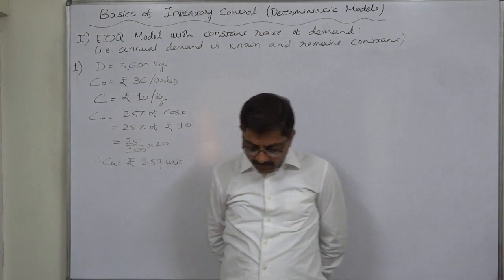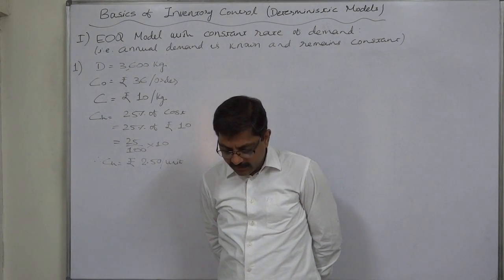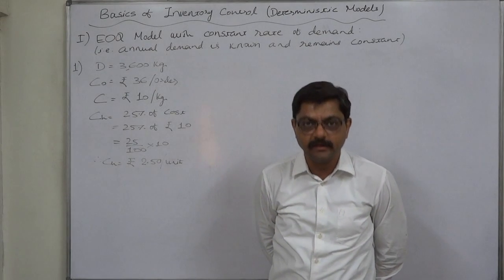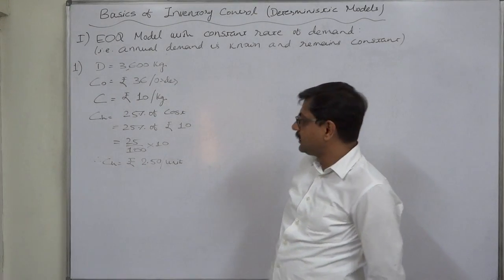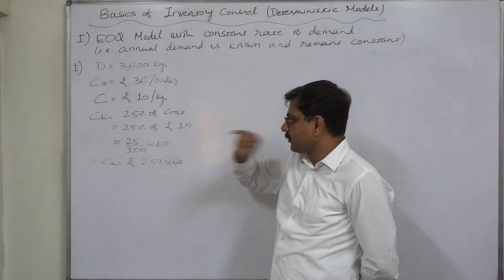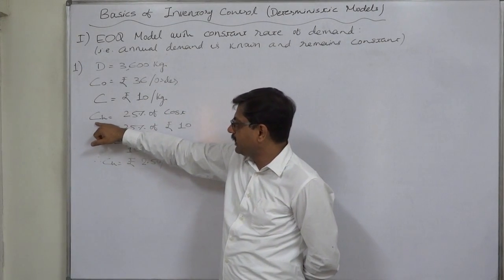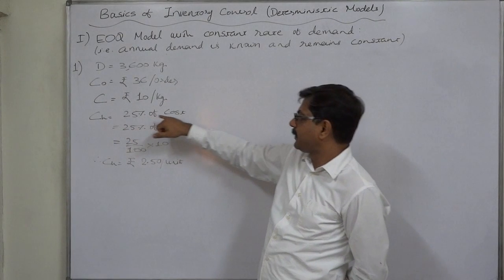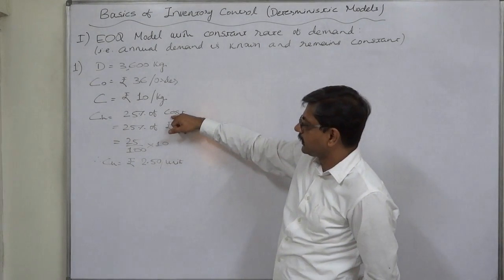And the cost of carrying inventory is 25% of the investment in the inventories. Investment in the inventories in simple word is the cost of inventory per unit or per kg in this particular case. The cost of carrying or cost of holding the inventory is 25% of investment in inventory, that is cost of inventory.